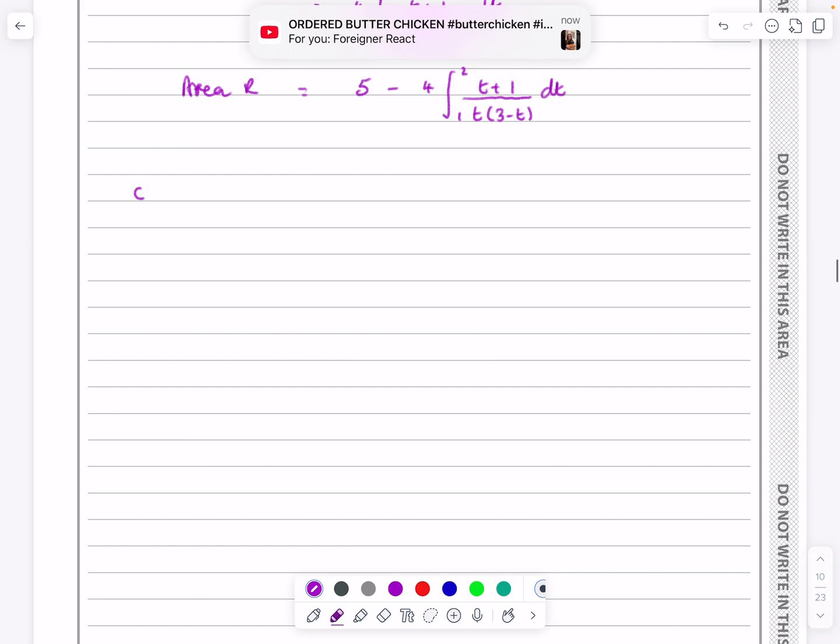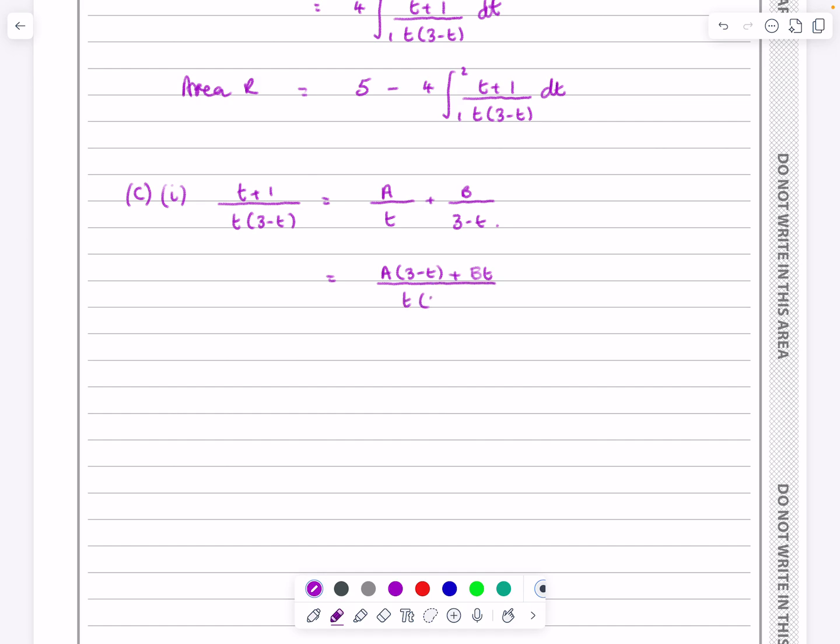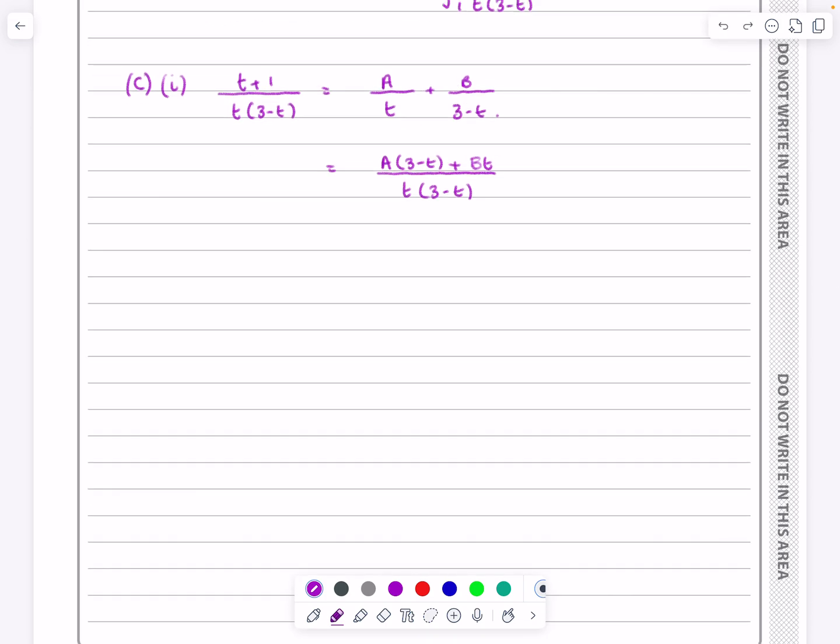So C part 1. What have we got? We've got T plus 1 all over T times 3 minus T. So I'm going to call that A over T, and then B over 3 minus T. If I want to add these together then, I'm going to get that plus that all over T times 3 minus T. So that's equal to T plus 1 over T times 3 minus T. And then we equate the numerators.